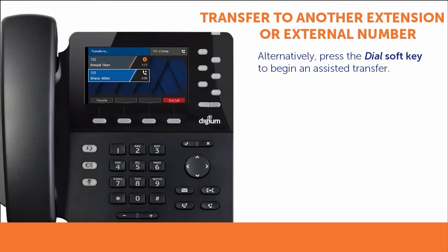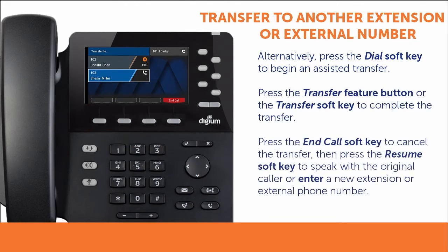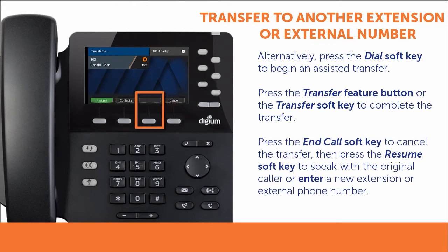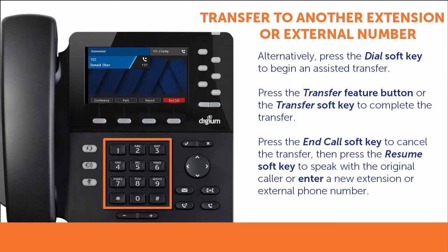If you wish to complete the assisted transfer, press the transfer feature button or soft key while speaking with your contact. If you wish to cancel the assisted transfer, press the end call soft key. You may then press the resume soft key to speak with the original caller or enter a new extension or phone number to try again.